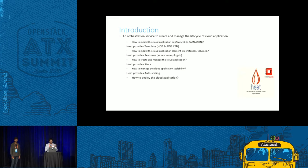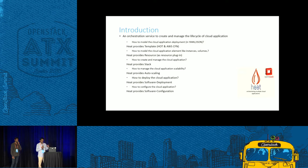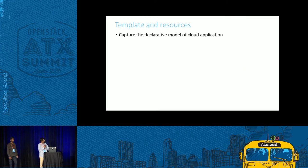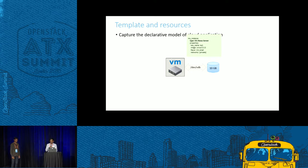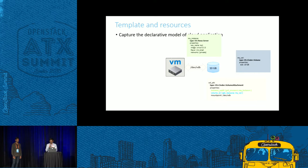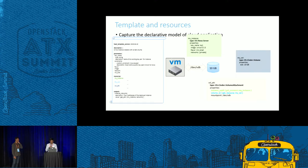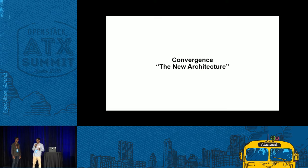On top of the infrastructure, you want to deploy the cloud applications — for that it gives software deployment. Once you deploy, you want to configure it — so it gives software configuration. While all this is happening, you want to track how things are going — that's where it gives events. To give a glimpse of a template: say you want to create an instance, create a volume, and attach it. You can model the instance as one resource, the volume as another resource, and attaching them as yet another resource. All this constitutes the heat template. Now we know what cloud applications are and how heat helps to deploy them.